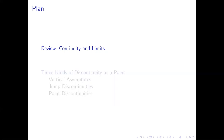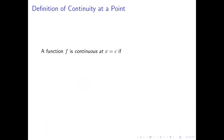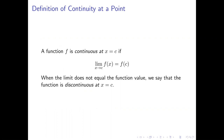Let's start by recalling how to define continuity in terms of limits. We say that a function f is continuous where x equals c if the limit as x approaches c of f of x is equal to f of c. And if this equation is not true for one reason or another, then we say that the function is discontinuous where x equals c.